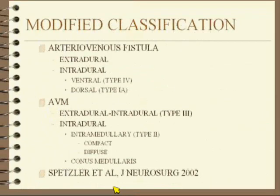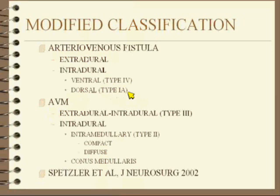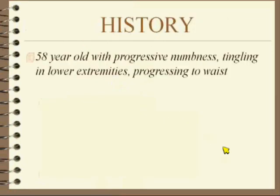Now, if that wasn't bad enough, Spetzler has gone and modified that classification. I just learned the 1 through 4, and now we're trying to throw that away — making it, I think, easier, looking at whether it's a fistula or an AVM. That's the classification scheme. Where we were with the 1A is now called a dorsal intradural fistula. And the type 4 is now called a ventral fistula — so that was the question. It's a ventral fistula, not the dorsal fistula. So, you did very well.